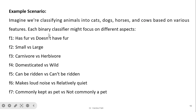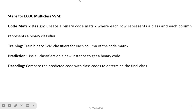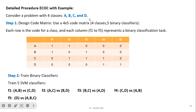As an example, imagine classifying animals into cats, dogs, horses, and cows using features f1 to f7. The ECOC steps are: code matrix design, training, prediction, and decoding. For a problem with four classes A, B, C, D and five binary classifiers, we create a 4×5 code matrix where each row is the code for a class and each column represents a binary classification task.